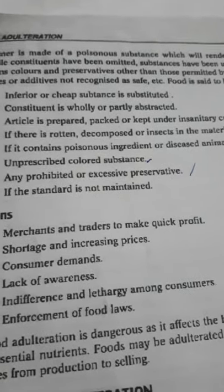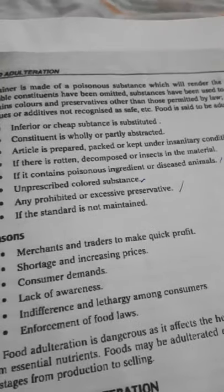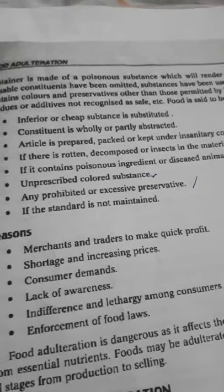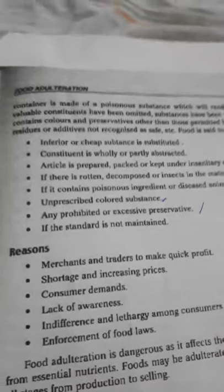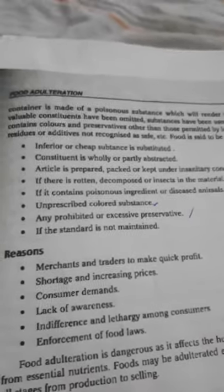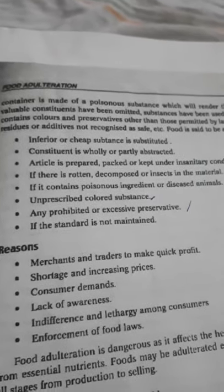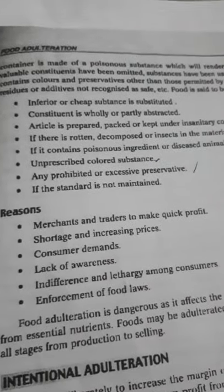The first reason is merchants and traders wanting to make quick profit. The merchants and traders do adulteration because they want quick profit. In the market they show shortages about different food items and then increase the prices. This way they are adulterating the food as well as making profit.